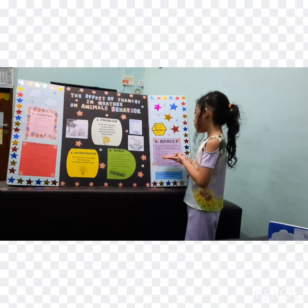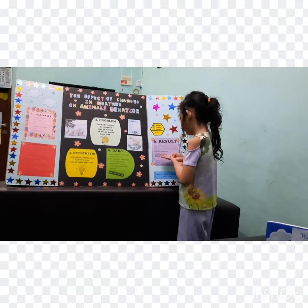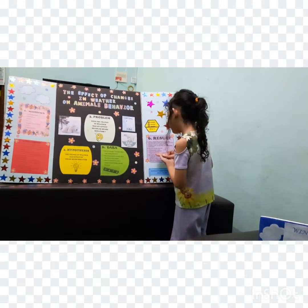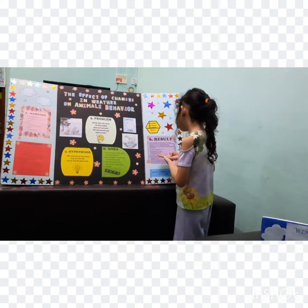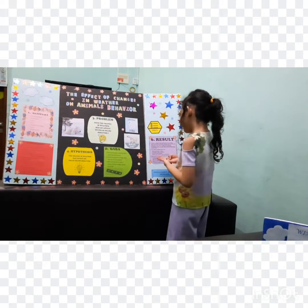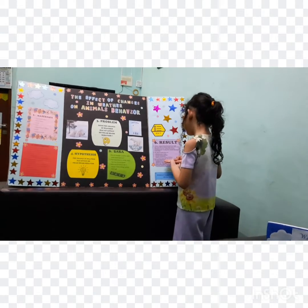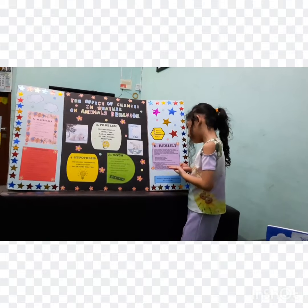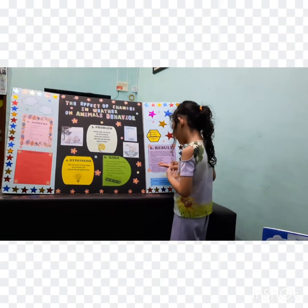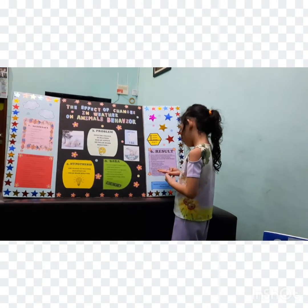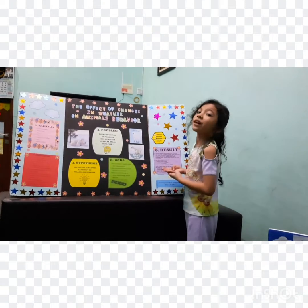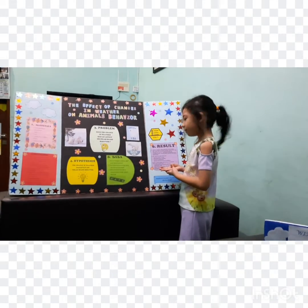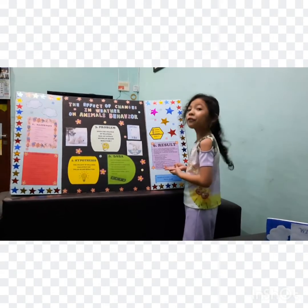Two: The effects on polar bears are reduced access to food, decreased body condition, increased cannibalism, and reduced survival rate of cubs. Three: There are some things you can do to help the world around you. Four: Cutting back on electricity and turning off your appliances when you are not using them can help save energy. Five: Plant a tree. A single tree can absorb a ton of carbon dioxide in its lifetime.